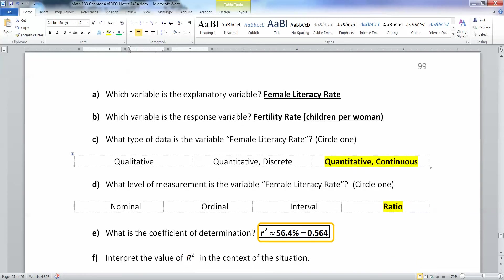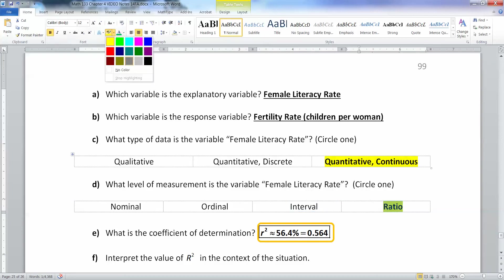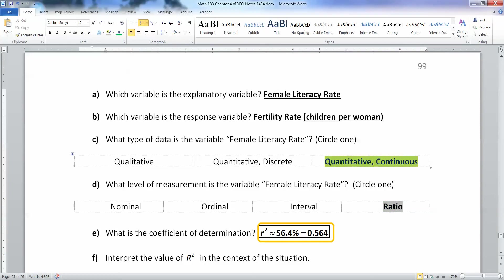And if it's quantitative continuous, then it's almost always either interval or ratio. And interval would be if you could have negative female literacy rate. And that's impossible. So that means it has to be ratio. Ratio because you cannot have a negative female literacy rate.